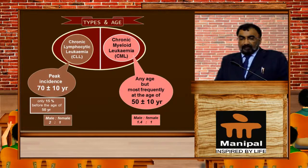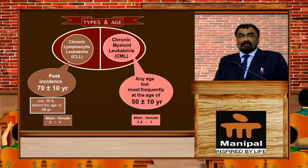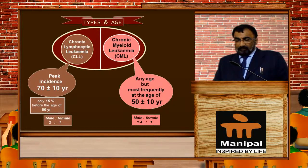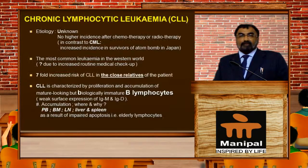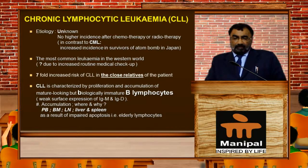It is increasingly recognized that cytogenetic and molecular abnormalities carry prognostic significance. Comparing CLL and CML: the peak incidence in CLL is between 70 ± 10 years, and in CML it is mostly 50 ± 10 years. Only 15% of CLL presents before age 50. Male-to-female ratio in CLL is 2:1, whereas in CML it is 1.4:1. The etiology of CLL is unknown with no higher incidence after chemotherapy or radiotherapy. CLL is the most common leukemia in the Western world.